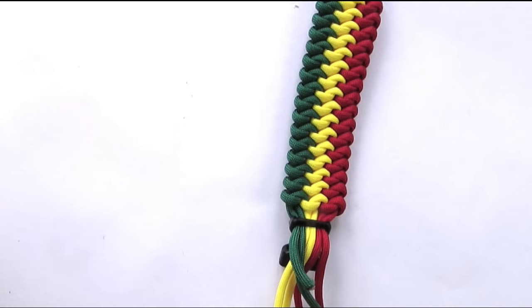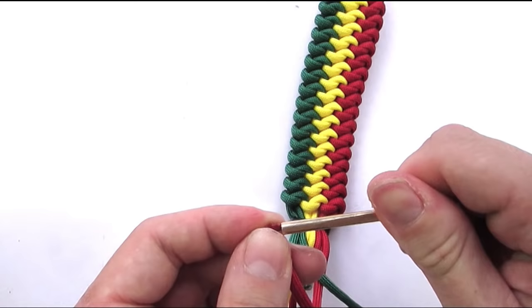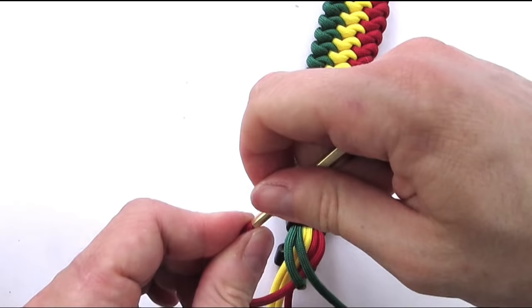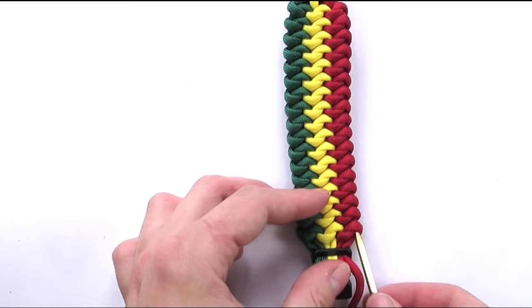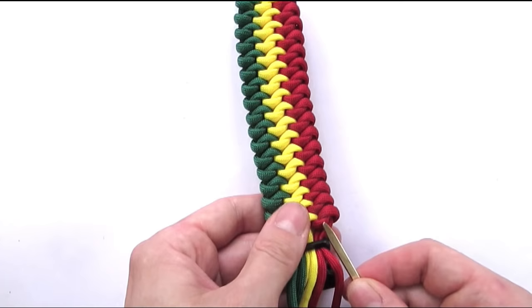Now what I do is take one of the cords, attach a lacing needle onto it, and then tuck it through a couple of sections of snake knots. I would recommend tucking it under at least four, and do this with all of your cords to complete the bracelet.